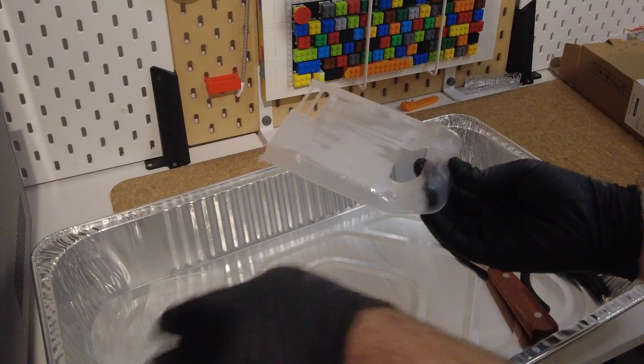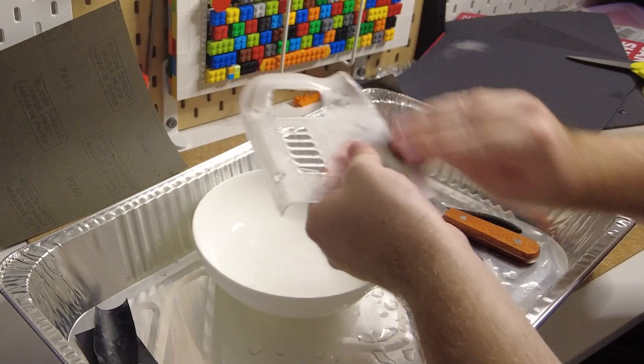And after washing them, I sanded the bumps from the supports, starting at 120 grit and finishing at 600 grit.